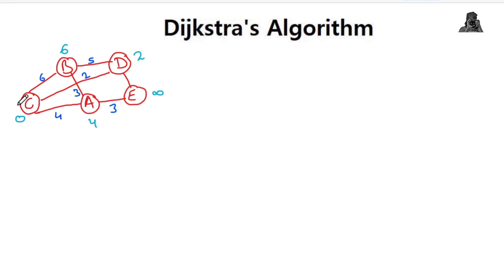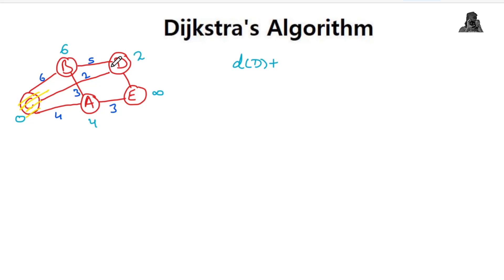C is already visited. Now we look at all unvisited vertices and their current distances: B=6, D=2, A=4, E=infinity. The lowest value is 2, so vertex D is selected next. From D, the adjacent vertices are B, C, and E. C is already visited, so we won't update it. We will check if the distances for B and E need to be updated.